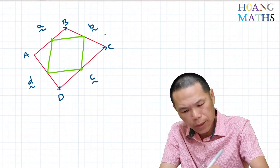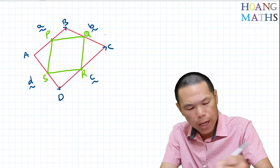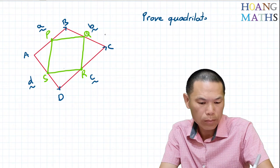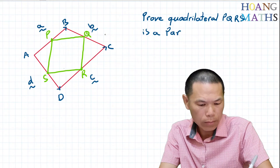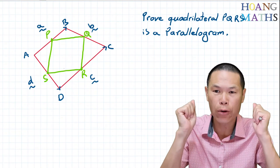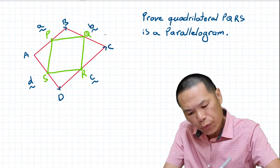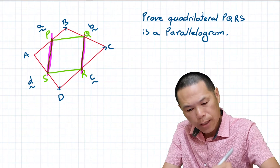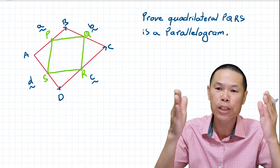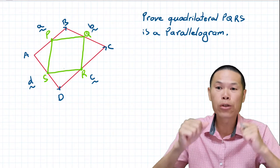So let's name these midpoints P, Q, R, S. The aim is to prove that PQRS is a parallelogram. We know that opposite sides of a parallelogram are equal — in other words, we can prove PS equals QR and PQ equals SR. We also know that if one pair of opposite sides are equal and parallel, then PQRS is a parallelogram. So let's prove that property.